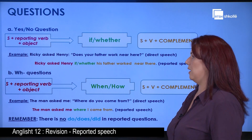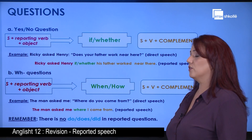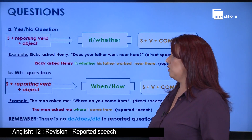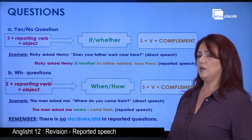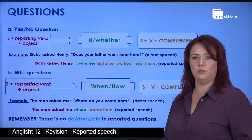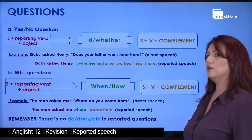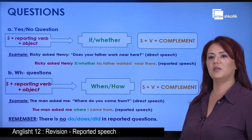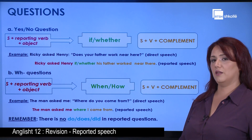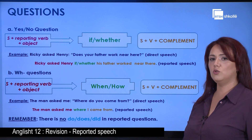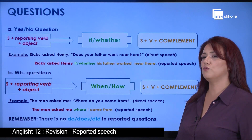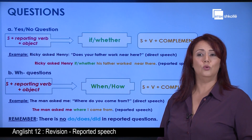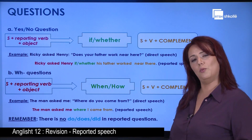Then we have the WH questions. The structure for these is: subject plus reporting verb plus object, then the WH question word (when, how, or another WH word), then subject, verb, and complement. For example, 'the man asked me, where do you come from?' and in reported speech this would become 'the man asked me where I came from.' Please bear in mind that there is no 'do', 'does', or 'did' in reported questions.